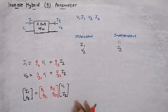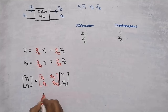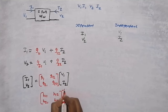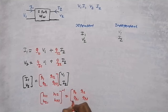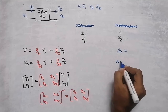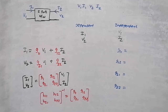This is the inverse hybrid parameter. We already found the hybrid parameter h11, h12, h21, and h22. If we can find the hybrid parameter matrix, then the inverse of that will be equal to the g-parameter matrix with g11, g12, g21, and g22.